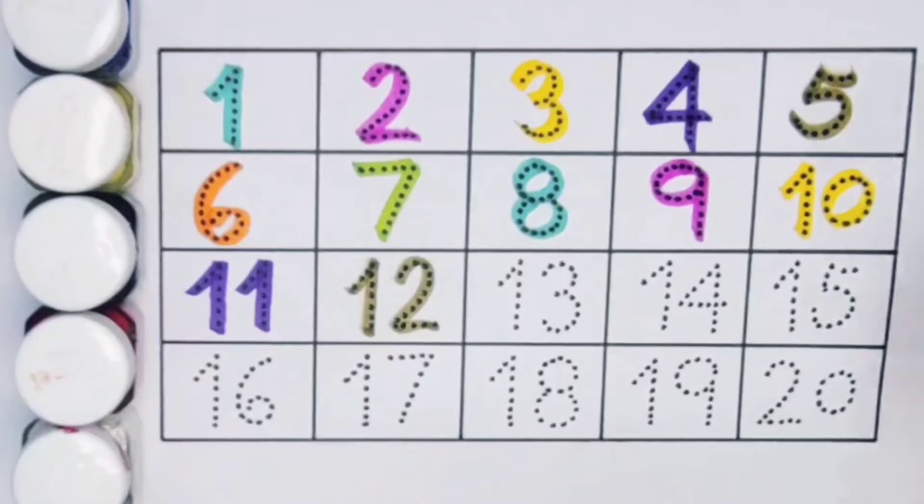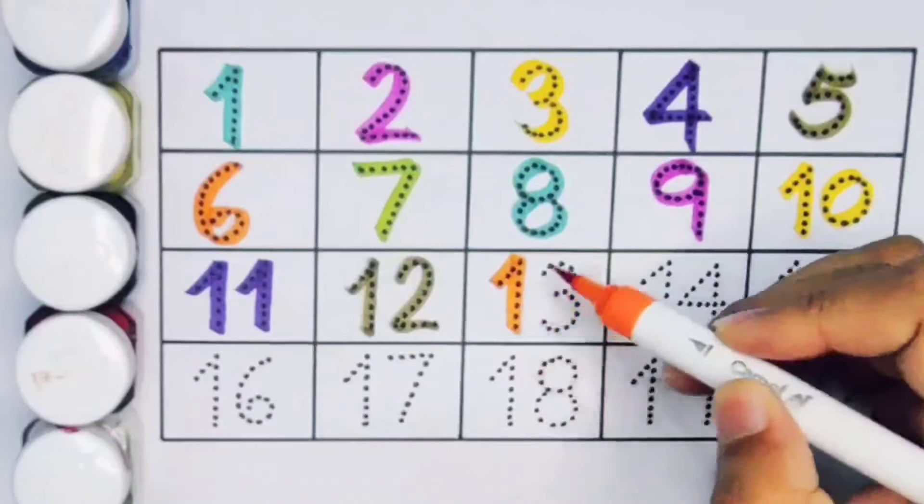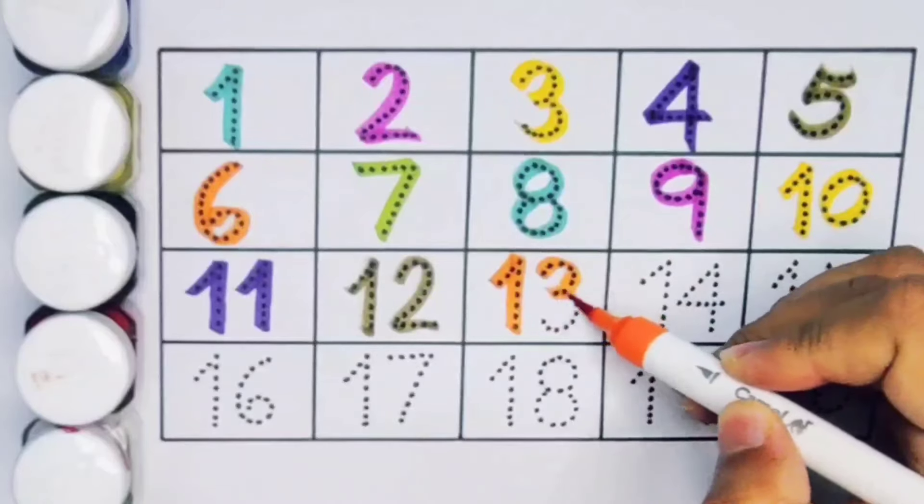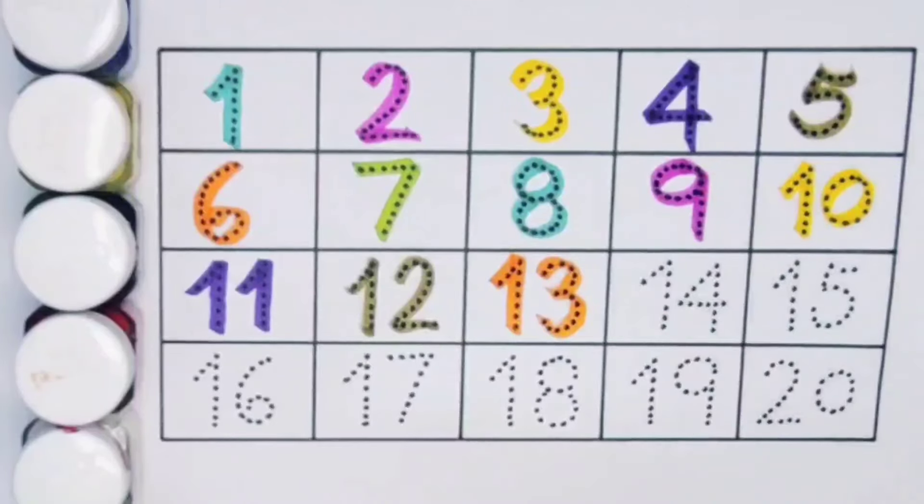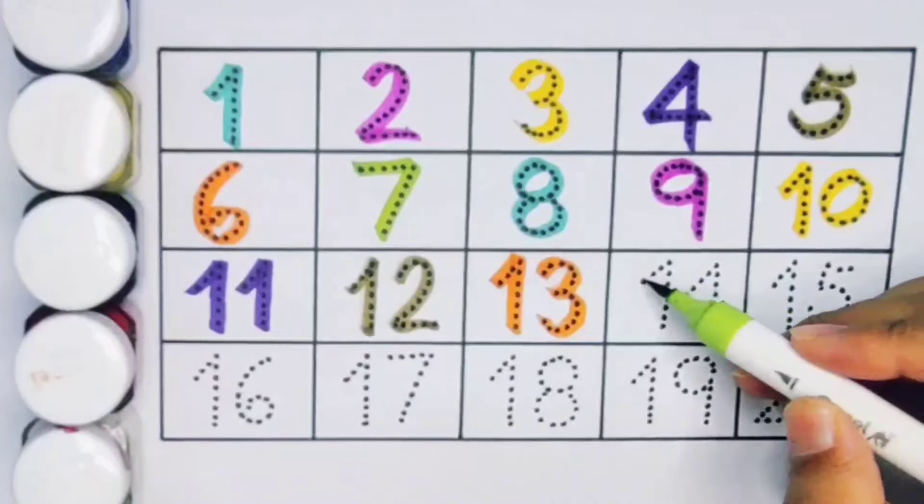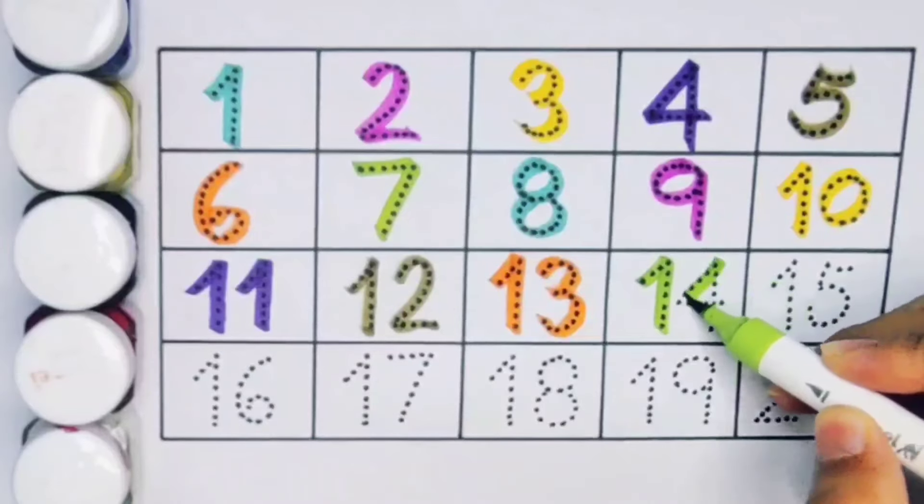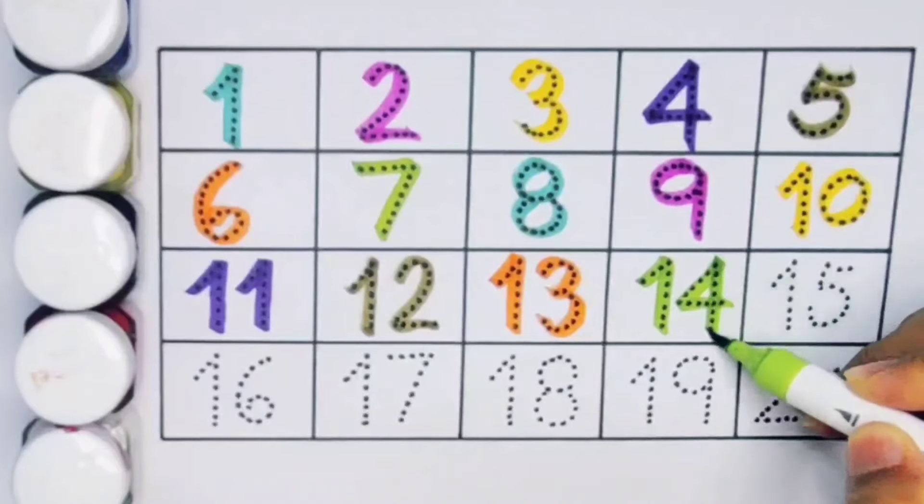Next kids 13, 1, 3. Number 13. Next kids 14, 1, 4, 14. Number 14.